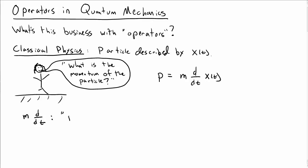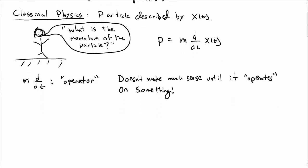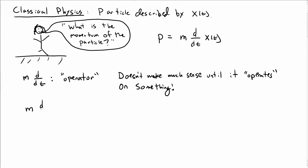At this point, we could write m d by dt as an operator. And the thing about an operator here is that it doesn't make much sense by itself. It only makes sense when you operate it on something. In particular here, you have to operate our momentum operator on the position x of t, and then you just get m d by dt x of t.